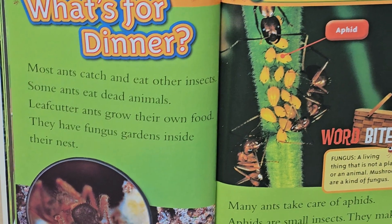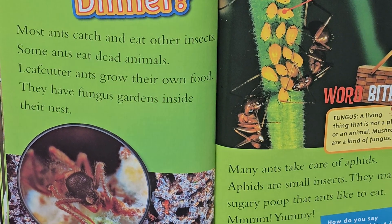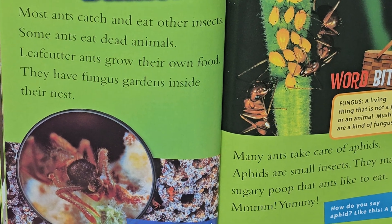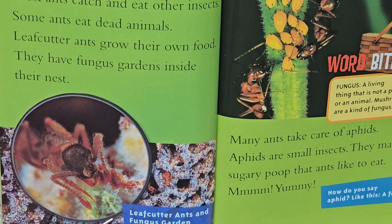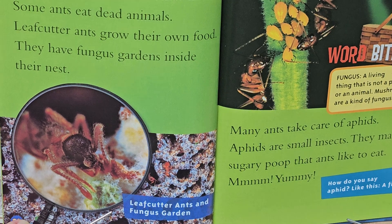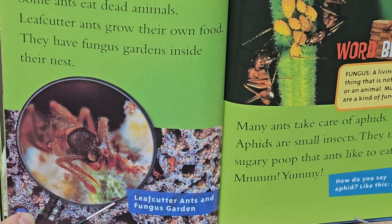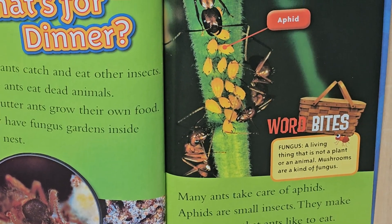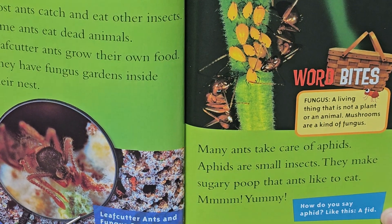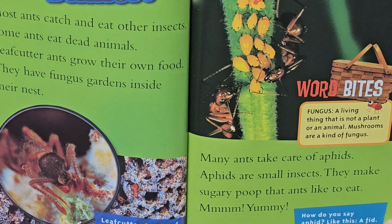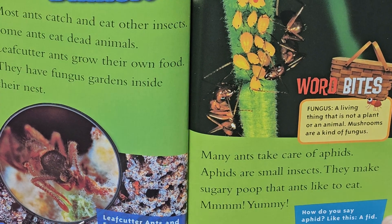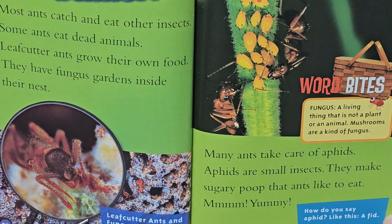What's for dinner? Most ants catch and eat other insects. Some ants eat dead animals. Leafcutter ants grow their own food — they have fungus gardens inside their nests. Many ants take care of aphids. Aphids are small insects. They make sugary poop that ants like to eat.